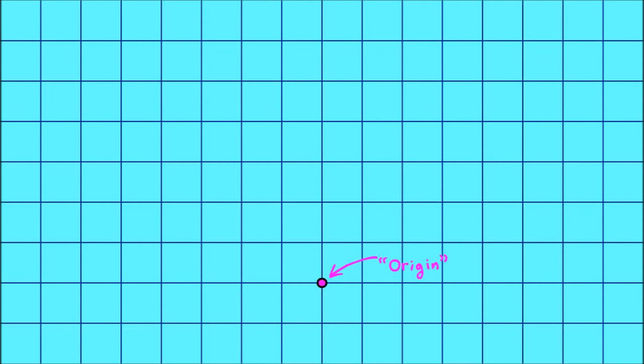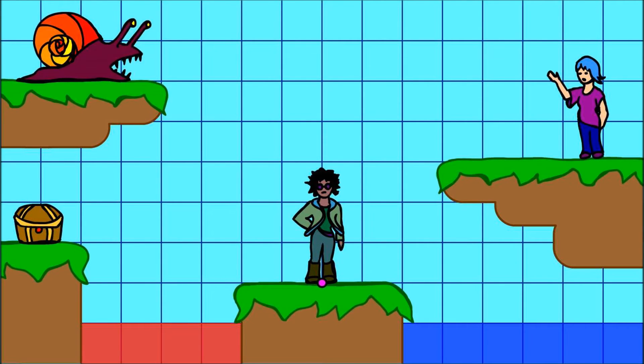If you were building a video game, writing a program to move a character around in this world, then you could name any location you wanted by writing two numbers. Say, 2.75 if you want to be 2.7 blocks to the right of the origin and 5 blocks above it.